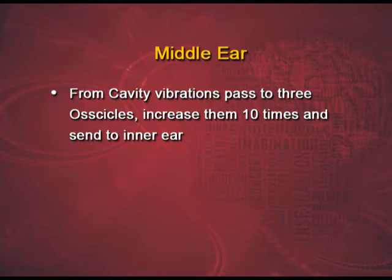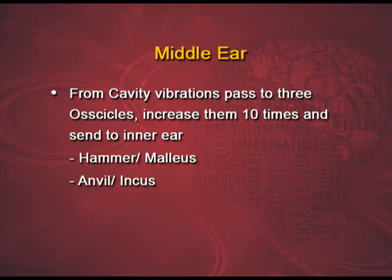There is a tympanic cavity, which is connected to the pharynx with the help of the Eustachian tube, which maintains the air pressure in the tympanic cavity. From this cavity, vibrations pass to the three ossicles. They increase the vibrations almost ten times and send them to the inner ear. The three ossicles are named hammer, anvil, and stirrup — also called the malleus, incus, and stapes respectively.